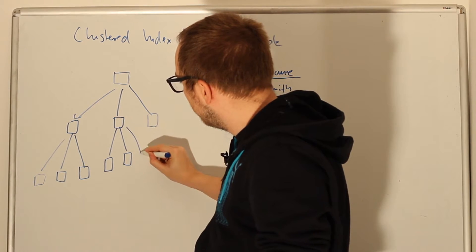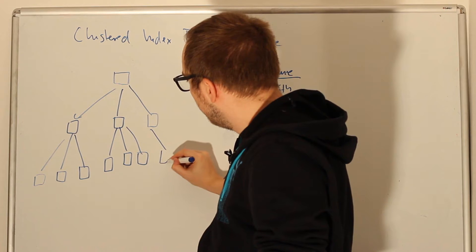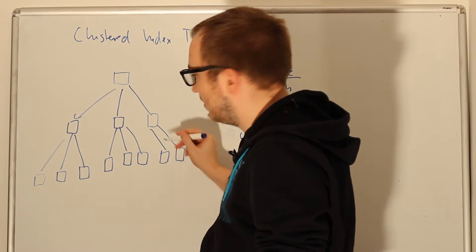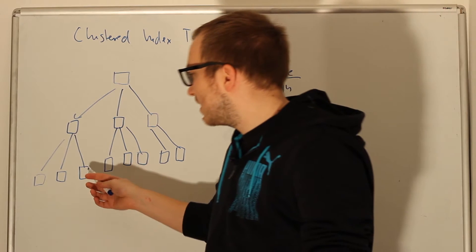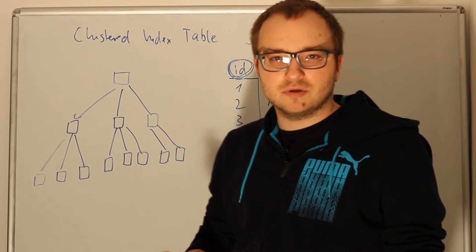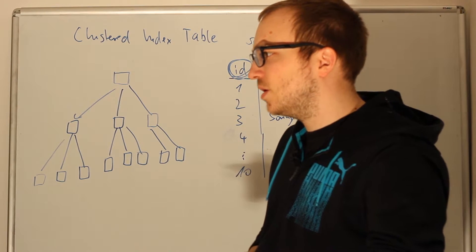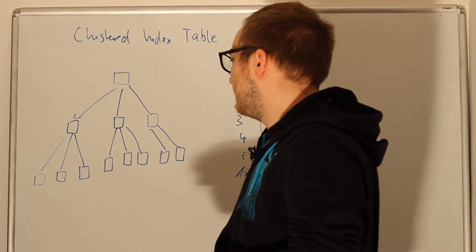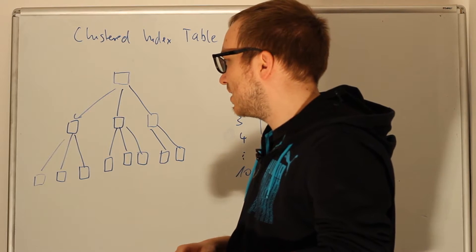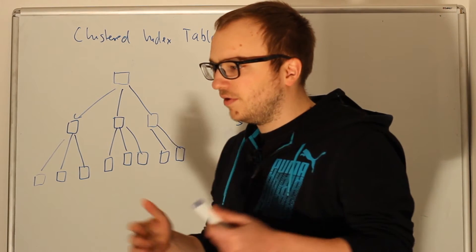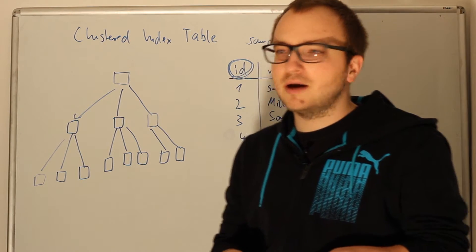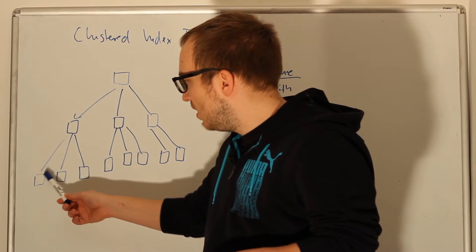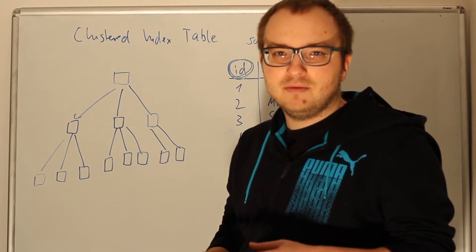From those intermediate nodes we have leaf nodes, and imagine that your data is stored into the leaf nodes only. In one leaf node, it's not just one value like we had in the previous example. In one leaf node there can be hundreds of rows, depending on how many columns you have in your table, and whether you have variable data types or not, and how much filled those data types are.